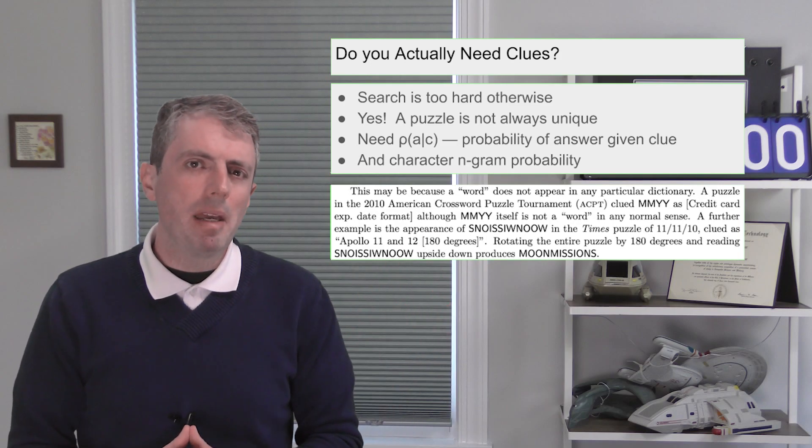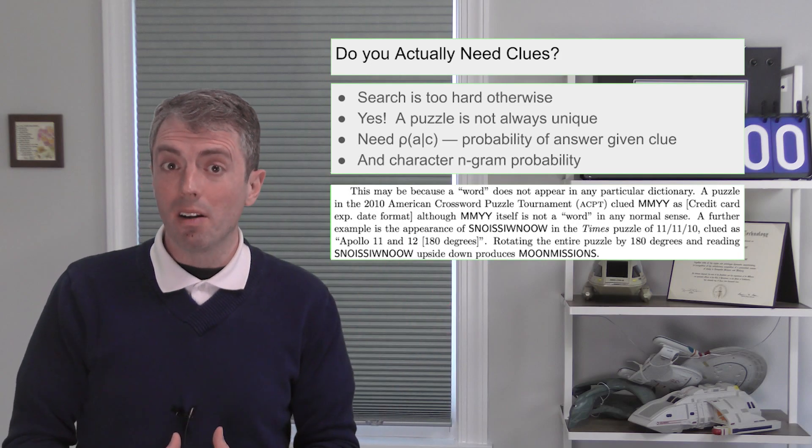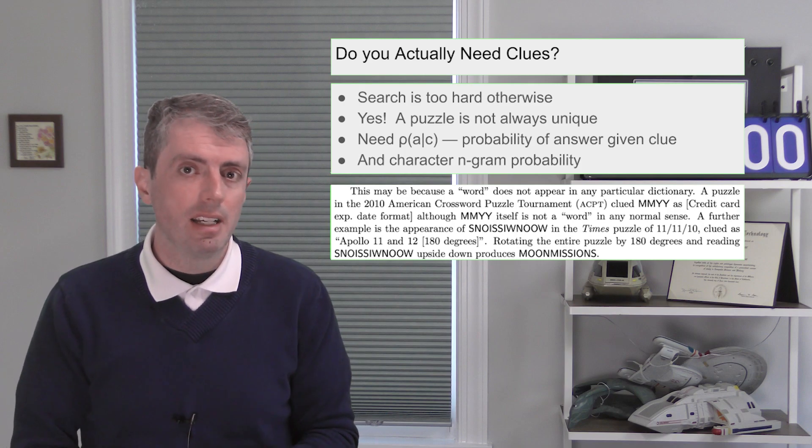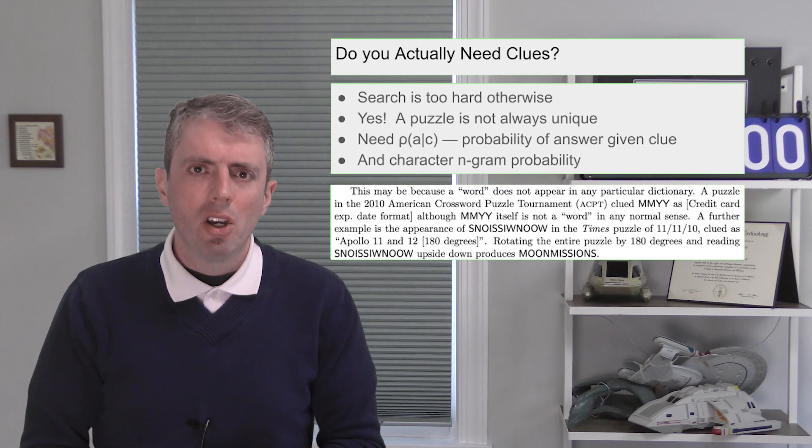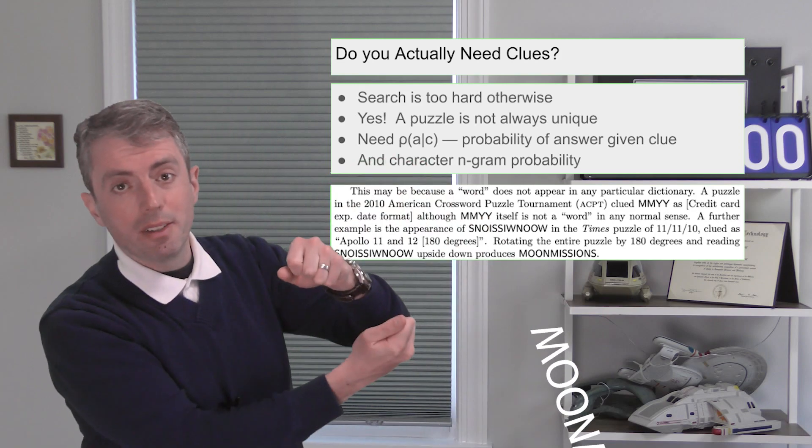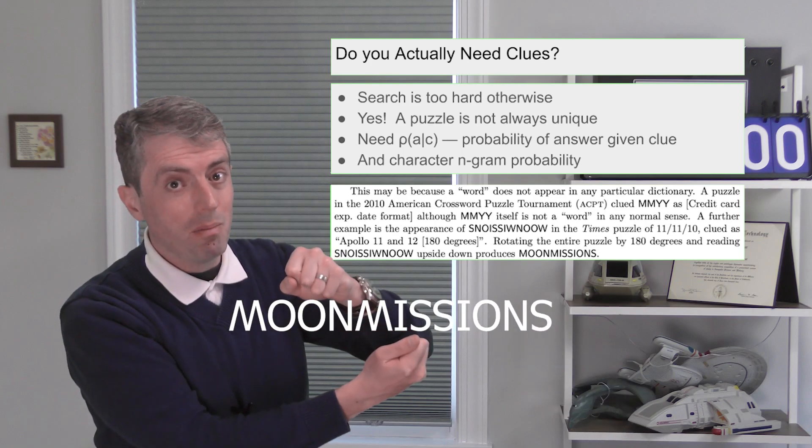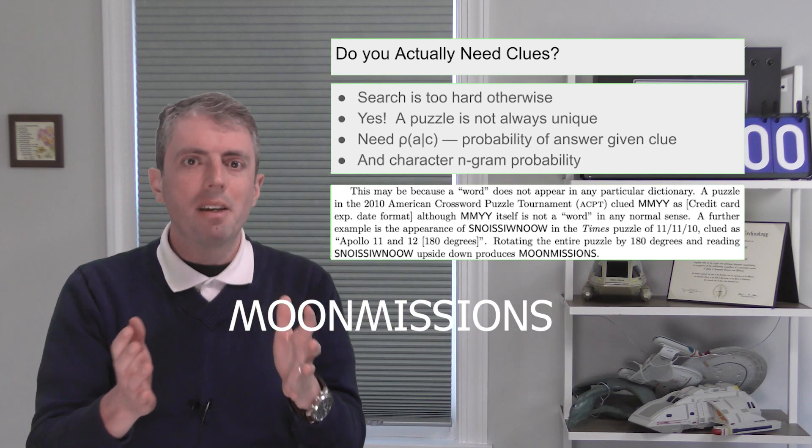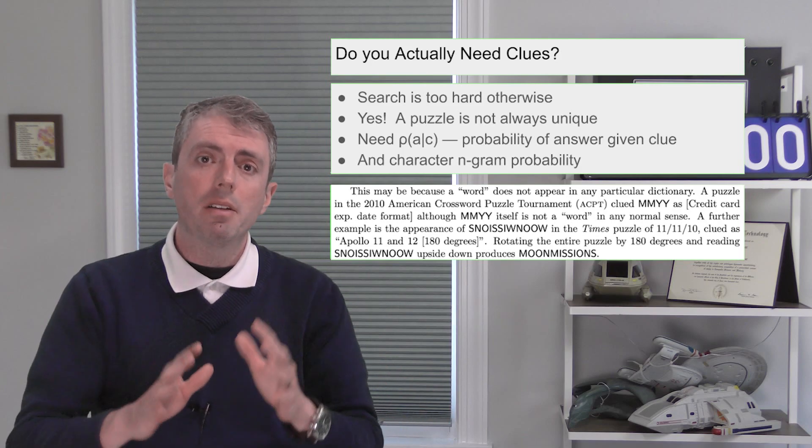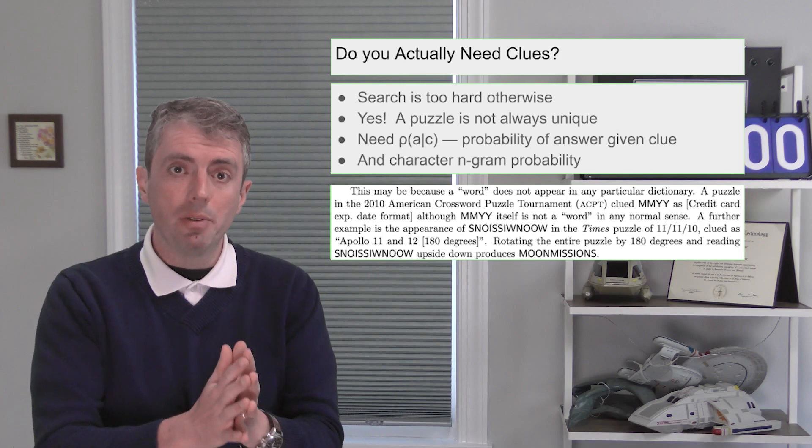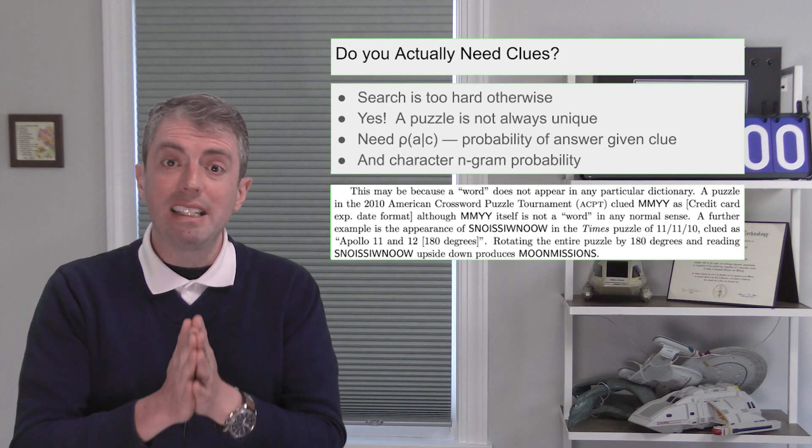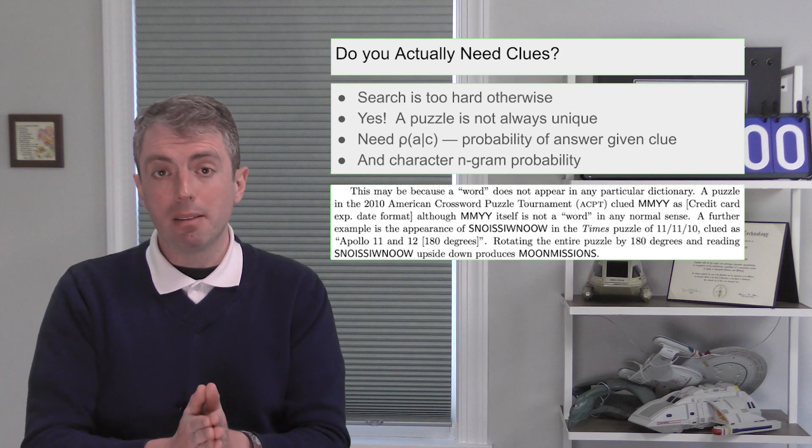Look at the examples here. MMYY isn't a word, but it's a reasonable answer for a credit card expiration date. Likewise, SNOI-SNOI-NO only makes sense when you rotate 180 degrees to spell MOON MISSION. So you need to accept answers that you haven't seen before and that aren't real words. Again, if you want to compete with humans, you need to be able to produce these answers too. Even if a computer can't figure it out, it needs to accept them as possibilities.